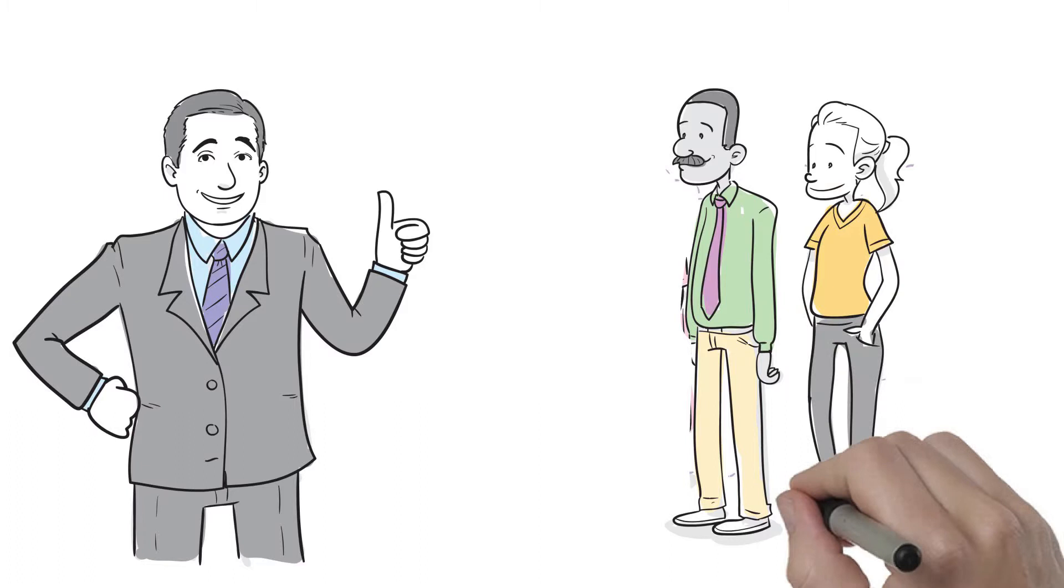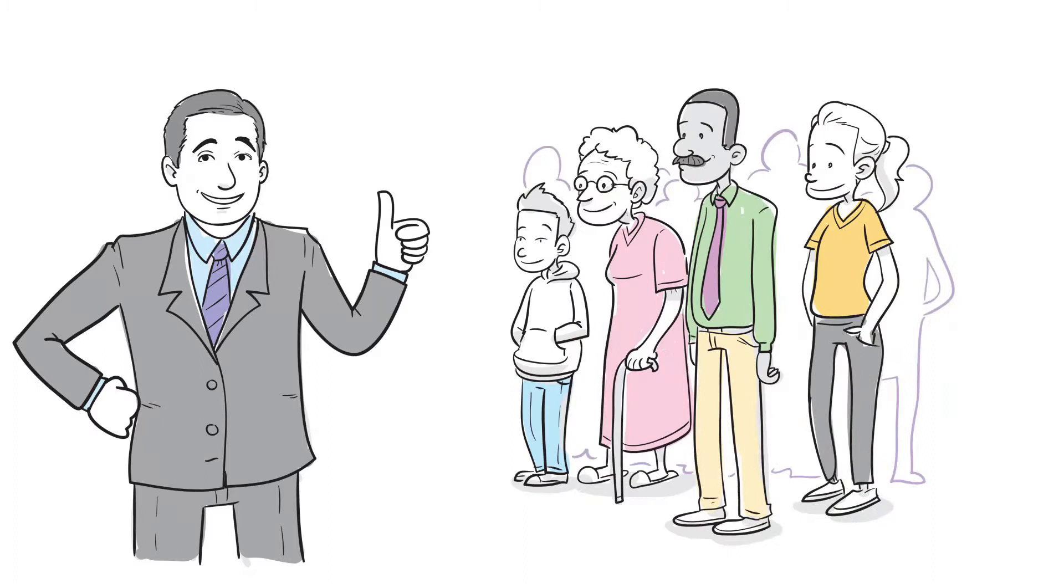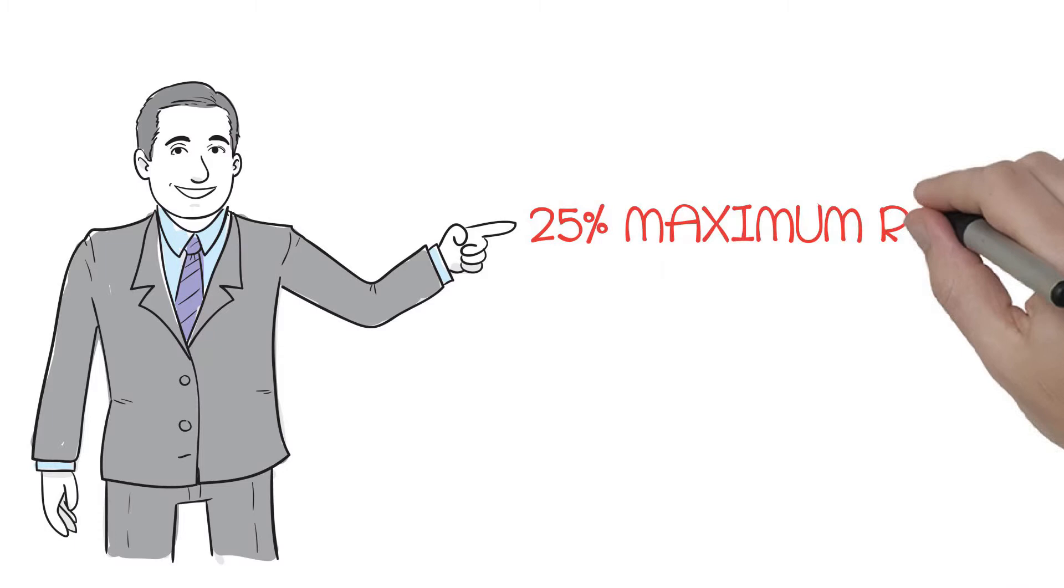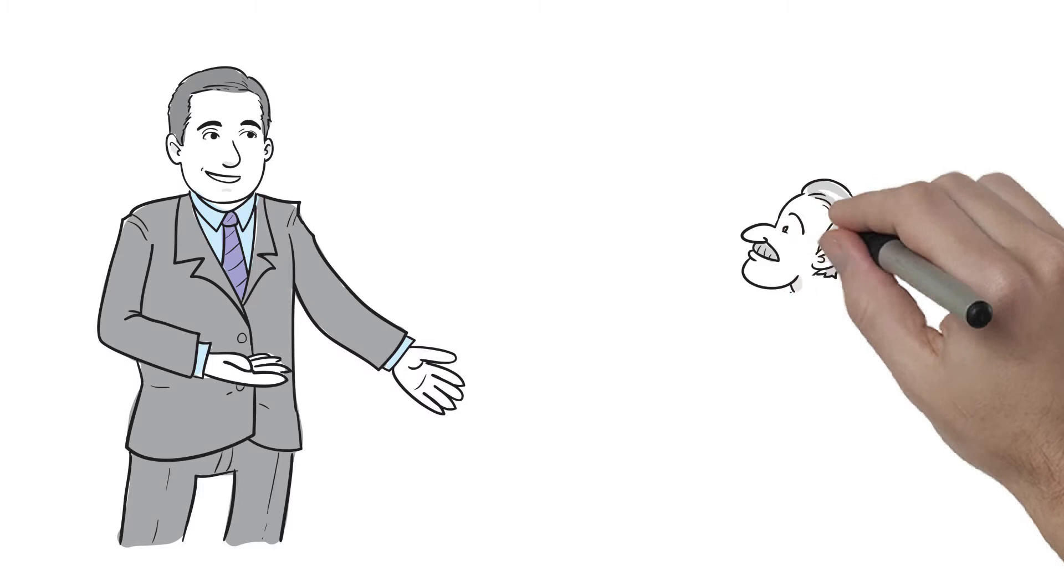It's an efficient, fair, and simple plan to revamp business taxes in order to give all citizens a shot at the American dream of owning their own business. Here's how it works. First, we lower taxes on business income to a maximum rate of 25%.